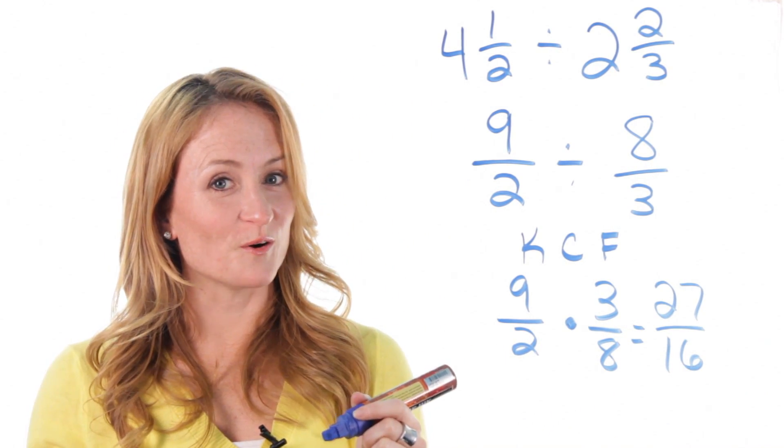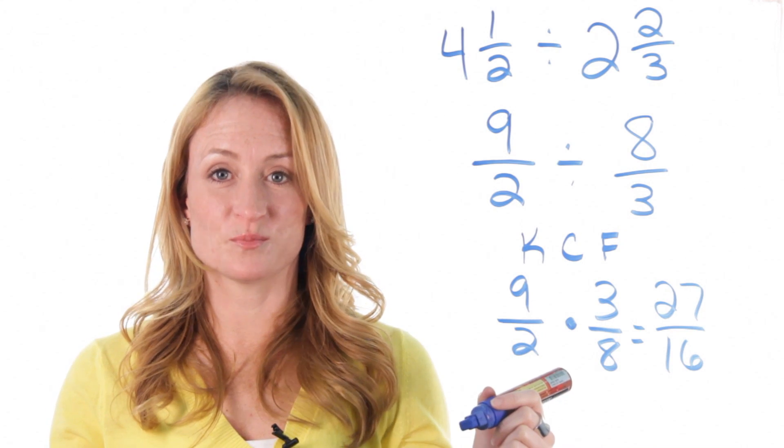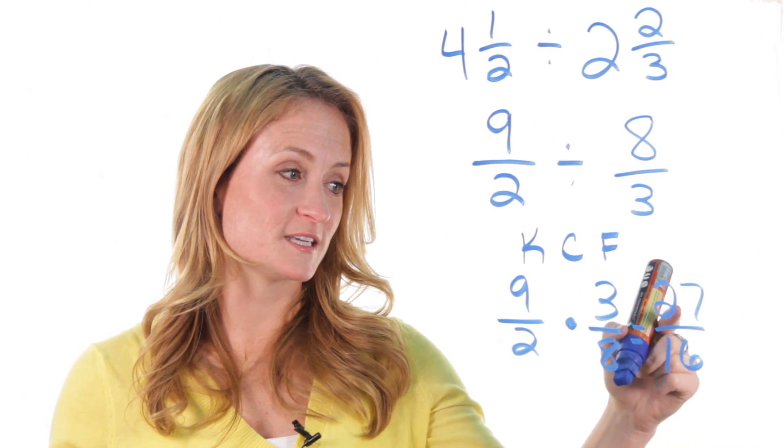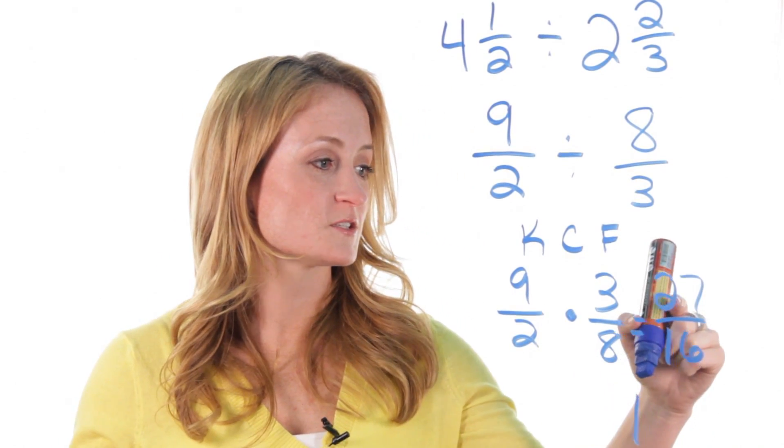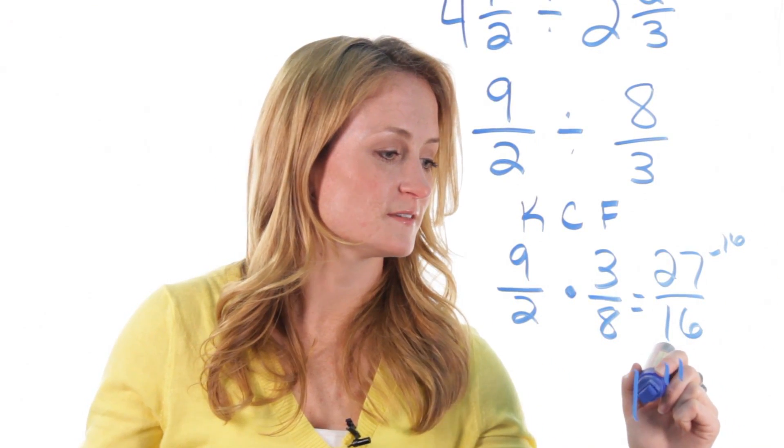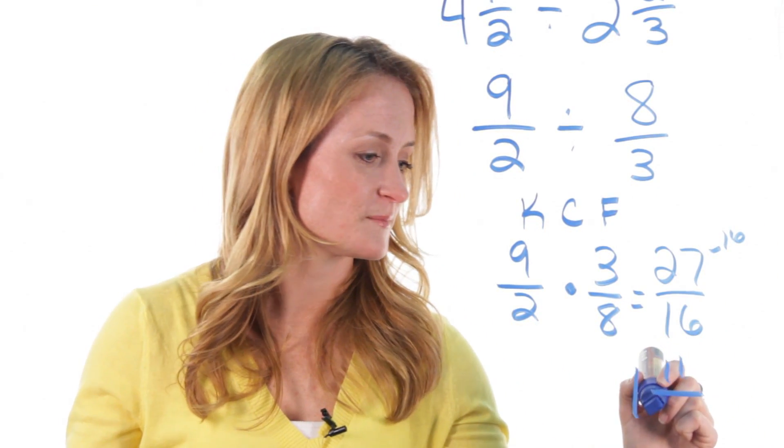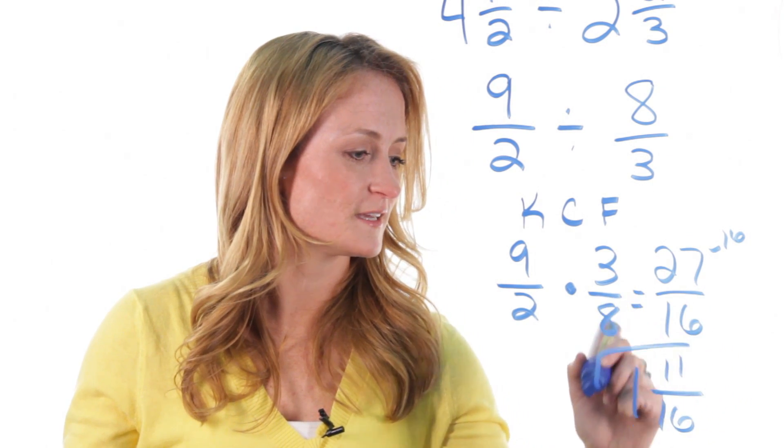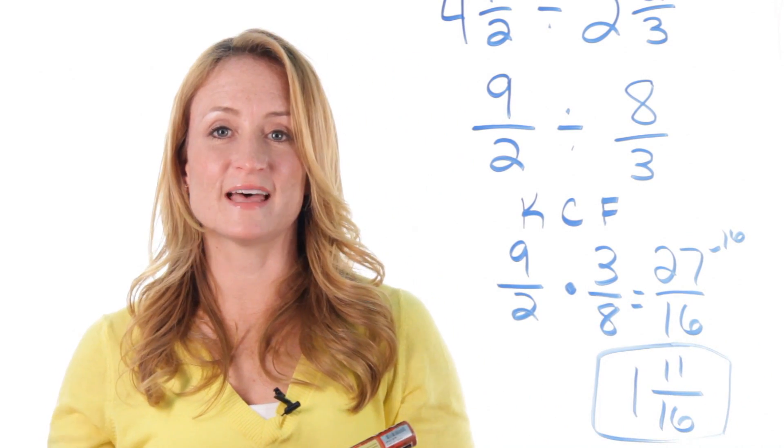You also know how to convert a fraction into a mixed number. How many times does 16 go into 27? Just once. 27 minus 16 is 11. And you leave your denominator the same. So your final answer is 1 and 11 sixteenths.